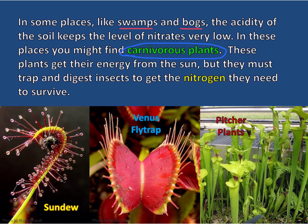Sundew plants, the Venus flytrap, and pitcher plants are all examples of carnivorous plants that digest insects to get nitrogen.